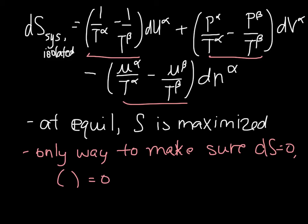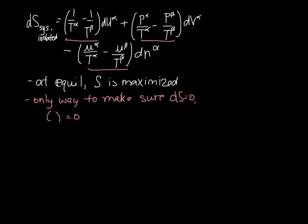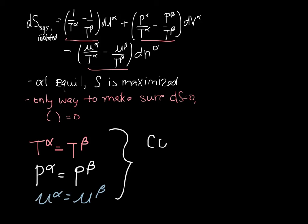So, if we do that, if we make the stuff in the parentheses equal to 0, and we start here, for this term to be equal to 0, the only way that that's possible is if T alpha equals T beta. And if we know that, then we can look over here. The only way for this term to be equal is for P alpha to be equal to P beta. And, from this term, for mu alpha to be equal to mu beta. So, these right here, these are called the conditions for equilibrium.